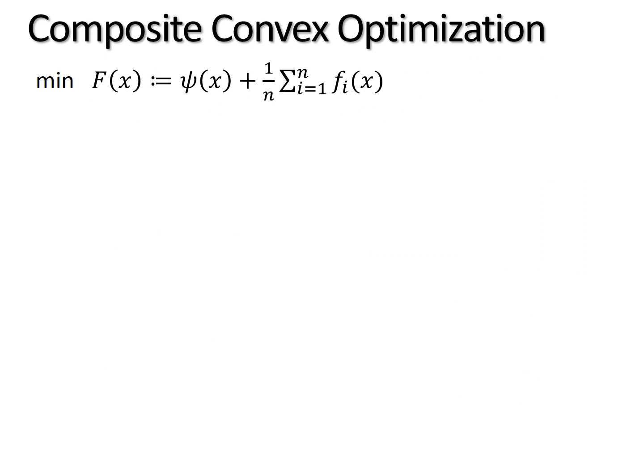Consider the famous composite convex optimization problem that is to minimize the summation of a regularizer and the finite sum of a bunch of loss functions.